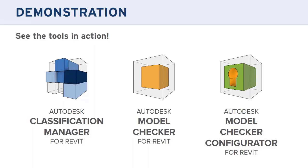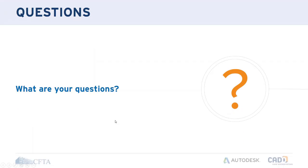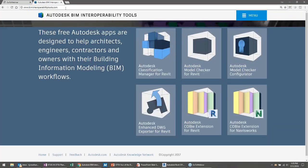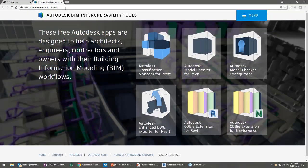If you come to the CFTA conference, we're going to do a deep dive of these things — the overview we did today plus really digging in to understand how they work, what the files look like, and how you can edit them. You'll learn a lot in that 90-minute session. First question from the QA: How do I get the tools? All the tools are found at biminteroperabilitytools.com. You can download for whatever version of Revit you have, supporting current release and three releases back.